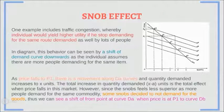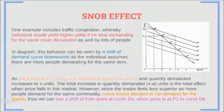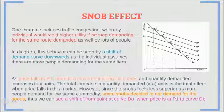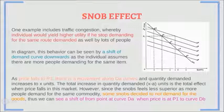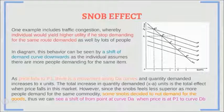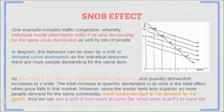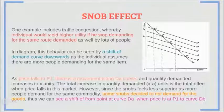Now let's analyze the snob effect in the diagram. One example is traffic congestion, whereby an individual would yield higher utility if he stopped demanding for the same route demanded by lots of people. This behavior can be seen by a shift of the demand curve downwards as the individual assumes more people are demanding the same item. As price falls to P1, there is a movement along DA curves and quantity demanded increases to X units. The total increase in quantity X minus A units is the total effect. However, since the snob feels less superior as more people demand the same commodity, some snobs decided not to demand the goods, causing a shift from DA to curve DB.